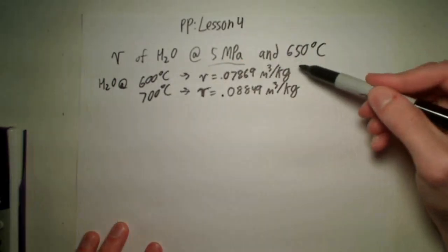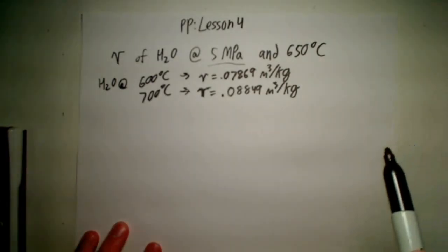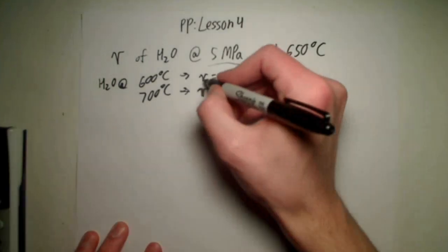Because 650 is exactly midway between these two values, the average of these two values will give me the specific volume, the exact same value as if I were to use the linear interpolation formula.